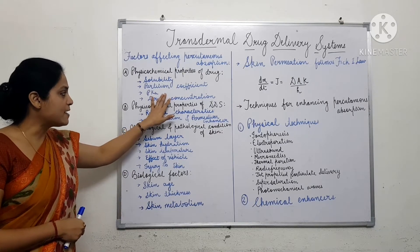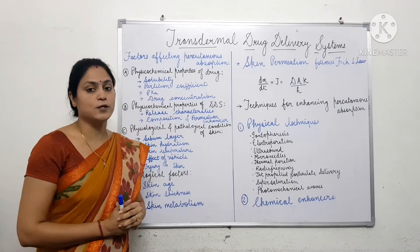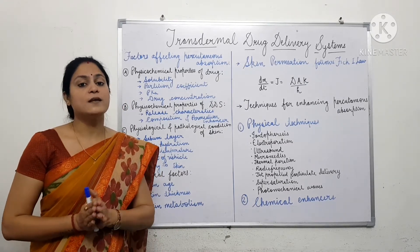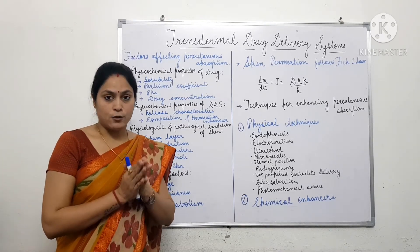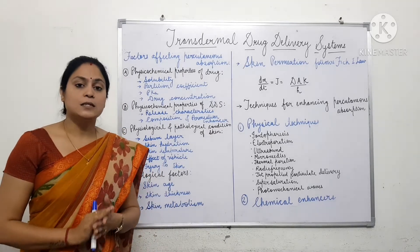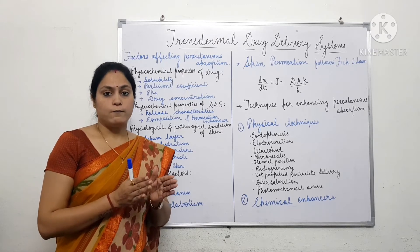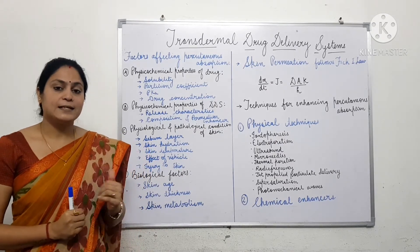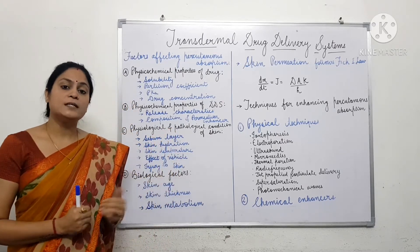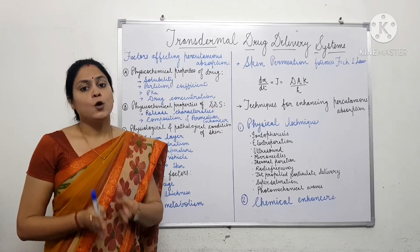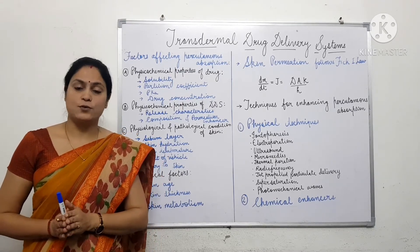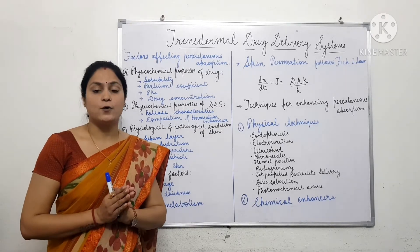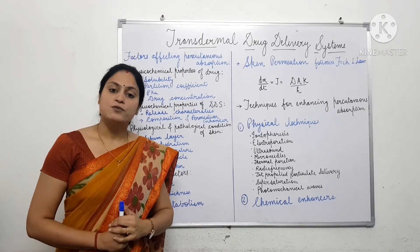Drug ionization and pKa are very important physicochemical properties of drug which determine absorption through skin. Most therapeutic agents may be either weak acids or weak bases, so they exist in both ionizable and non-ionizable form. It is the non-ionizable form which permeates preferably through the skin. Weak acidic drugs having pKa value between 3 to 7.5, and weak basic therapeutic agents having pKa value between 7 to 11, preferably exist in non-ionizable form and are better absorbed through transdermal patches.